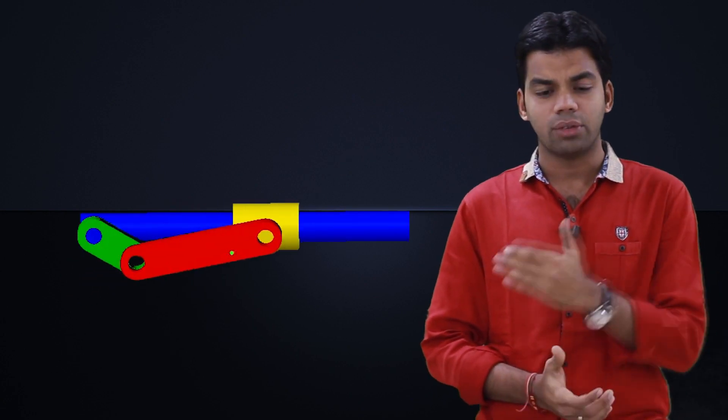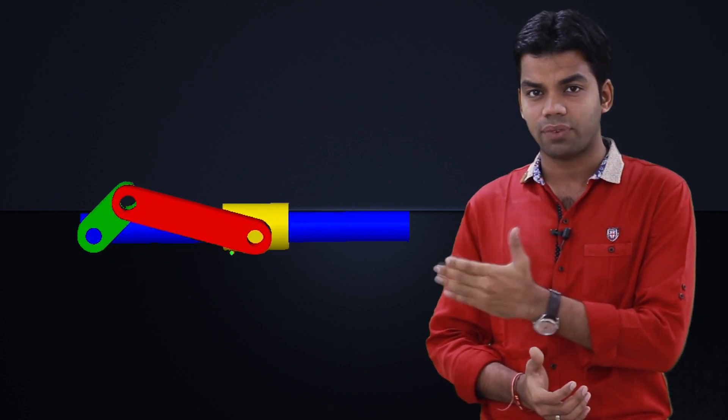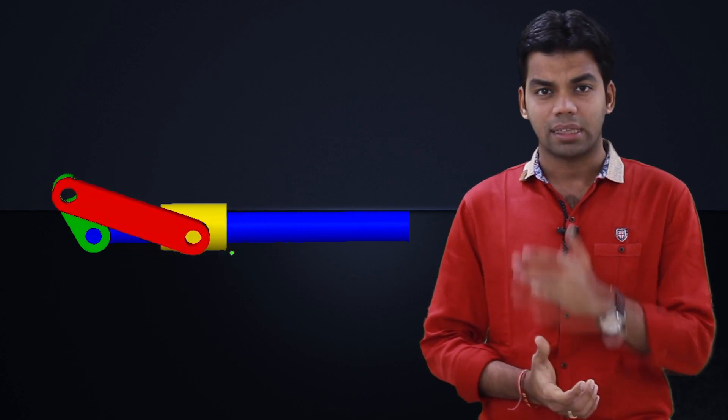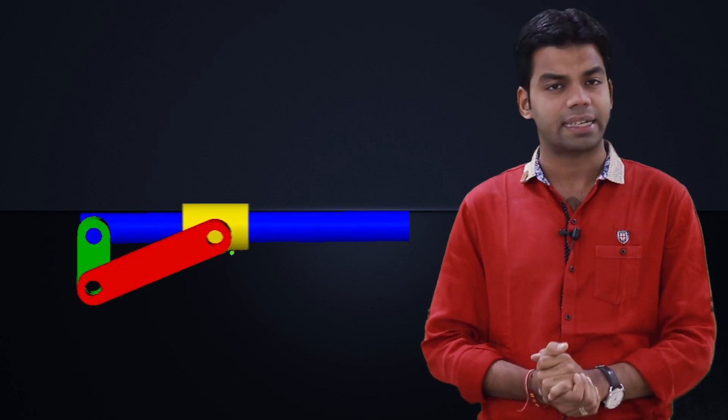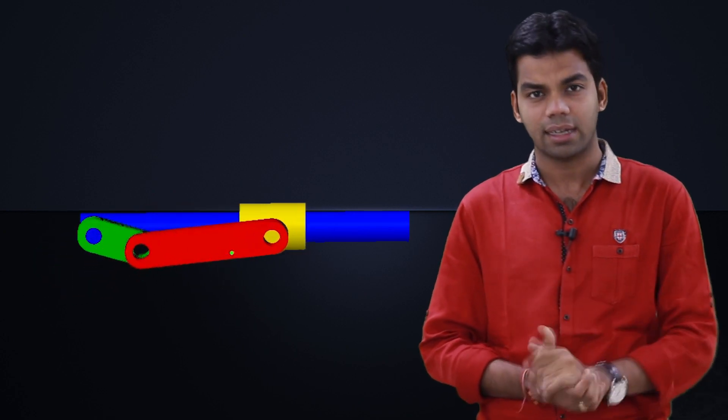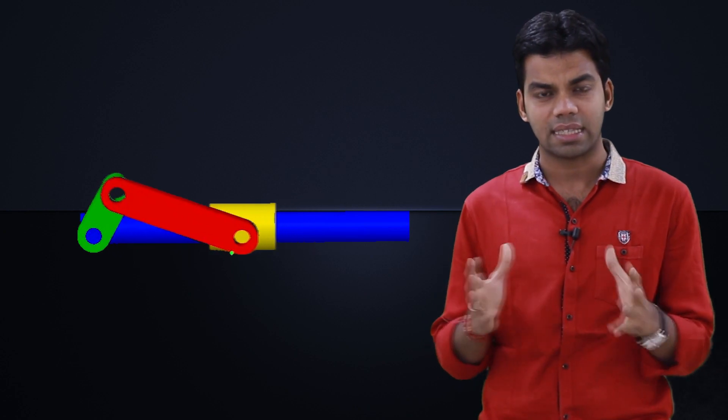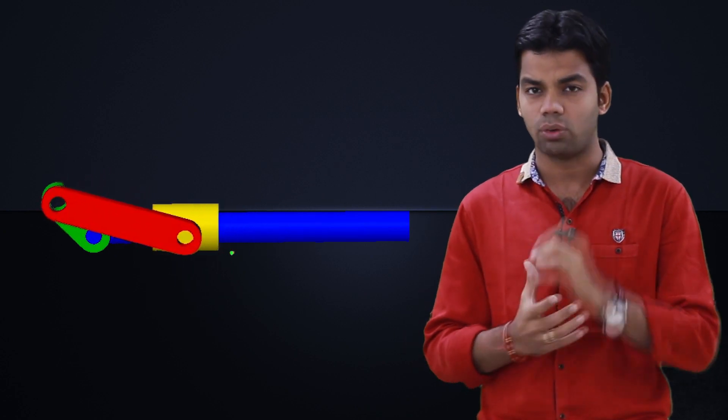With the help of animation it will be very clear how we achieve this. Initially we have a slider crank mechanism. The fixed link (the frame) is shown in blue. The crank, which rotates continuously, is in green. The connecting rod is in red, and the slider — which slides over the fixed link — is in yellow.